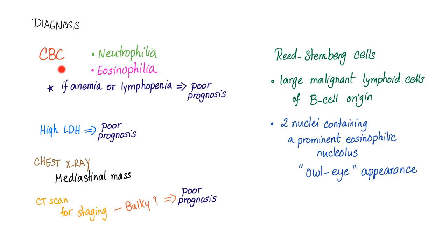To diagnose Hodgkin's, you need a complete blood count — you'll find neutrophilia and eosinophilia. Sometimes there is anemia, which is normocytic normochromic. If you have anemia or lymphopenia, Hodgkin's has a poor prognosis. High LDH also carries a poor prognosis. On chest X-ray you'll find a mediastinal mass. On CT scan, used for staging, you can find bulky lymph node involvement — anything bulky carries poor prognosis.